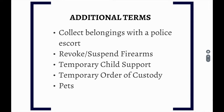In addition to the basic instructions of an OP, a family court OP can include some additional terms. It can allow a party to collect belongings with a police escort. It can revoke or suspend firearm licenses. Although rare, a family court OP can grant temporary child support or institute a temporary order of custody — though best practice is to still file a separate petition for custody and child support. And, once again, it can include pets.